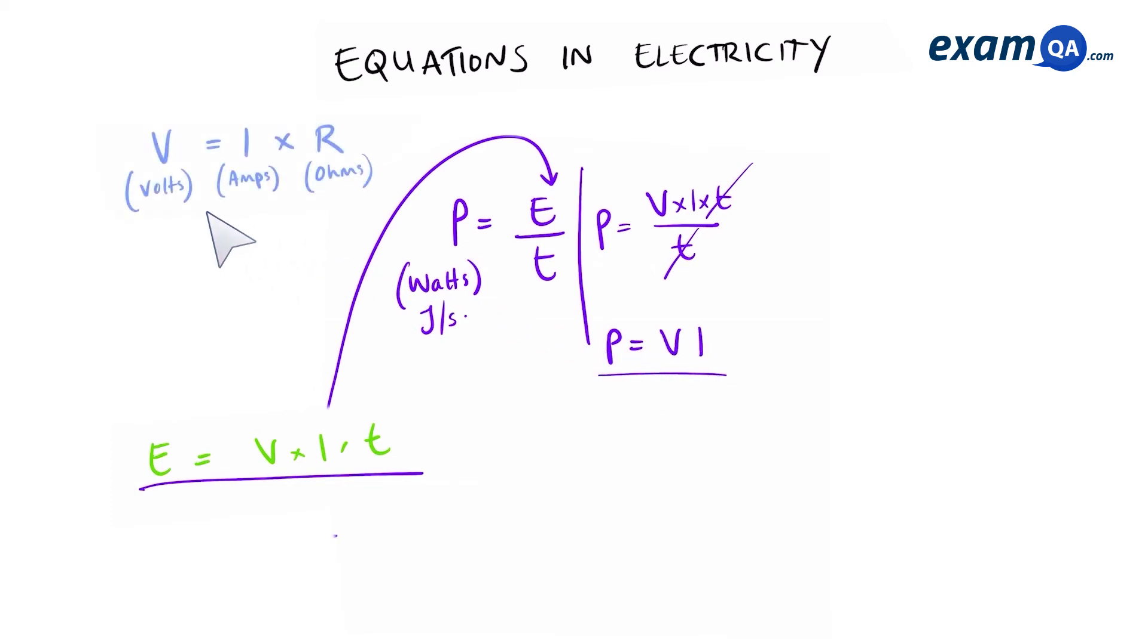Since we know that V is equal to IR, we can substitute this V for an IR and say that power is equal to IR times I. So that leaves us with power is equal to I squared R.